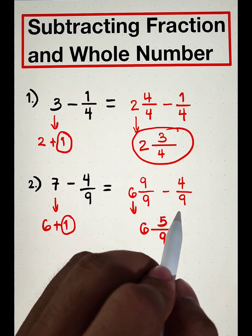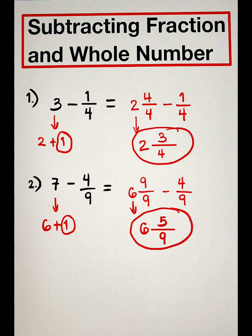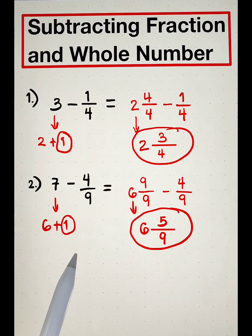And this is it, guys. The correct answer in subtracting 7 minus 4 over 9 is simply 6 and 5 over 9.